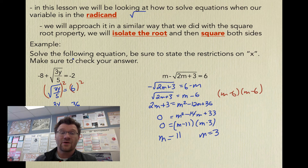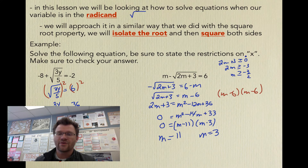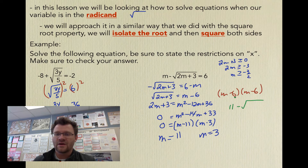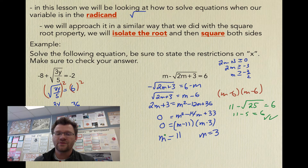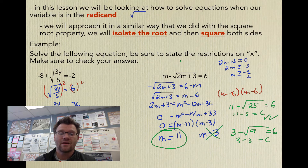We need to check these answers, and we also need to state our restrictions. We know 2m + 3 must be greater than or equal to 0, so m must be greater than or equal to negative 3/2. Both answers satisfy this, but we still check them. Plugging in m = 11: 2(11) = 22, plus 3 is 25, so 11 minus 5 equals 6 — that checks. Plugging in m = 3: 2(3) = 6, plus 3 is 9, so 3 minus 3 does not equal 6 — that's extraneous and must be discarded. Always check your answers.